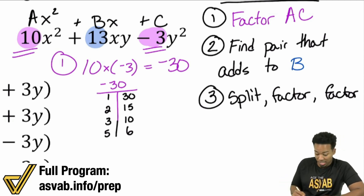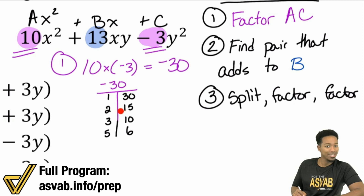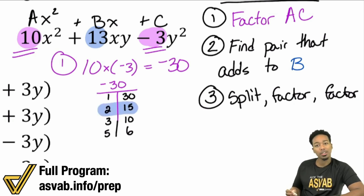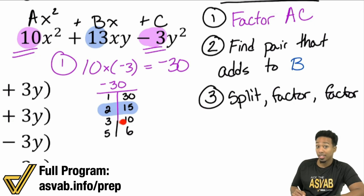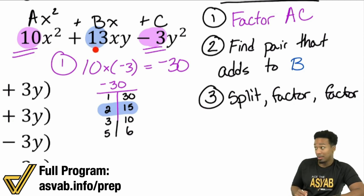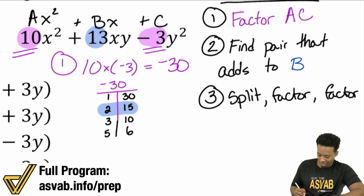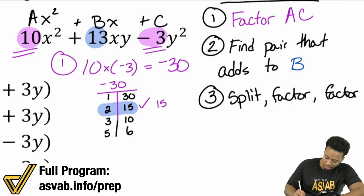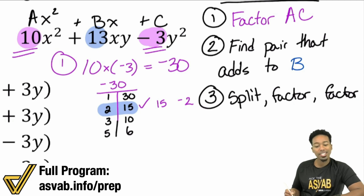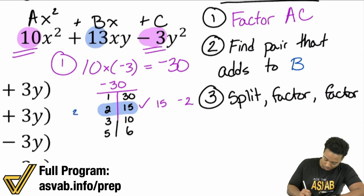So we're basically looking for a pair with a difference of 13. 1 and 30 differ by 29 — no. 2 and 15 differ by 13 — yes, that works: 15 minus 2 equals 13. 3 and 10 differ by 7, and 5 and 6 differ by 1 — neither works. So our pair is positive 15 and negative 2. We've completed step 2.